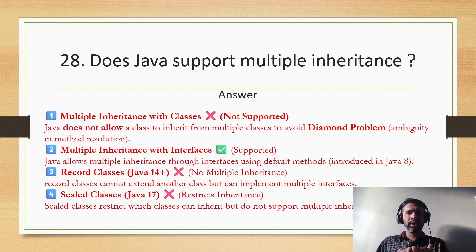In case of records, it can only basically implement the multiple interfaces, it cannot extend any other class. And in case of sealed class, basically it will restrict the classes which can inherit, and even sealed class also will not support the multiple inheritance.